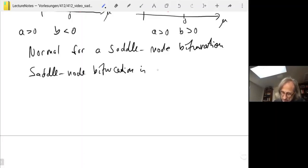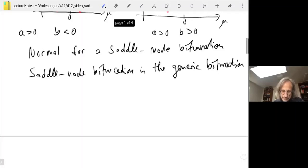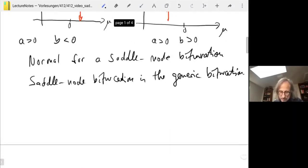The generic bifurcation. There are other bifurcations, but you have to tune parameters to get those. So they're more special.